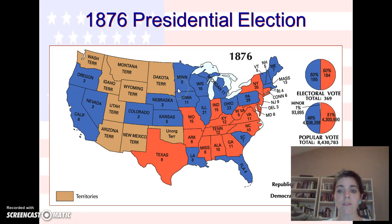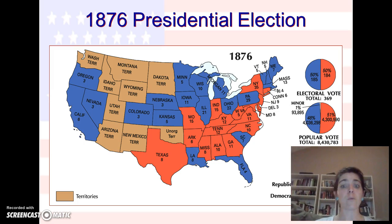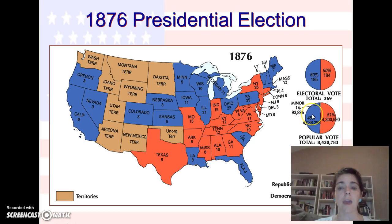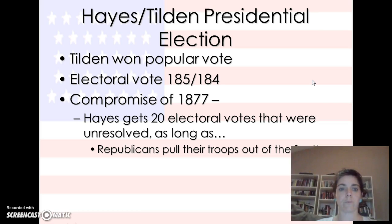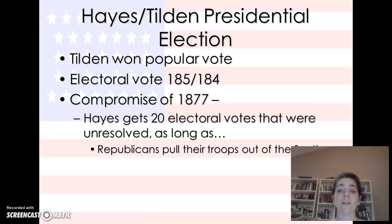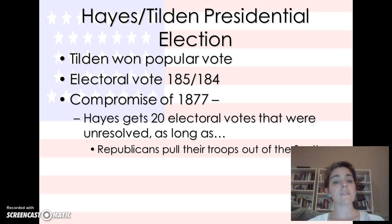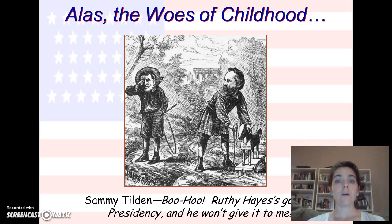Here's the issue: if Hayes, the Republican, wins, he will want to keep Reconstruction going. If you get a Democrat from the south, they won't want Reconstruction to stay — the south has been through a lot, they want to be left alone, and they're still angry at the Union. What happens is Tilden wins the popular vote, but Hayes wins the electoral vote. This is what we call the Compromise of 1877 — write that down, highlight it, and underline it. Hayes gets 20 electoral votes that were unresolved, and Republicans agree to pull their troops out of the south. The south said they would let Hayes be president as long as the military was removed from the south.